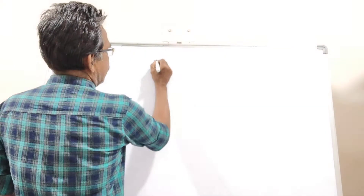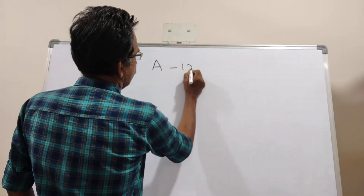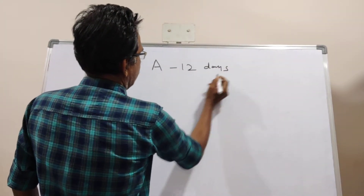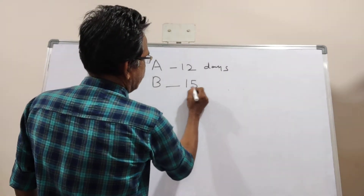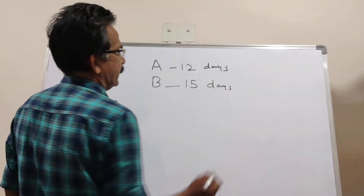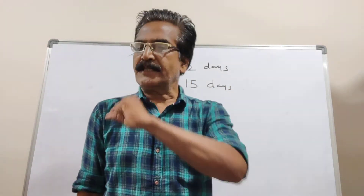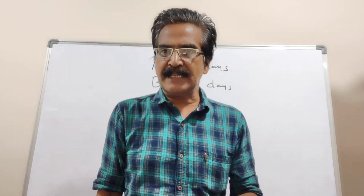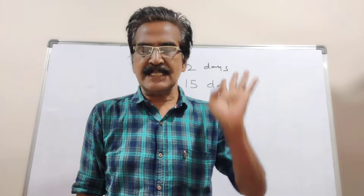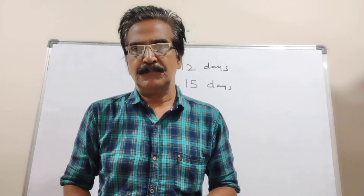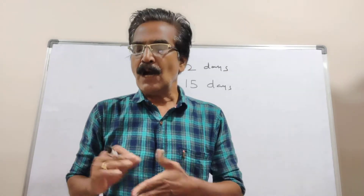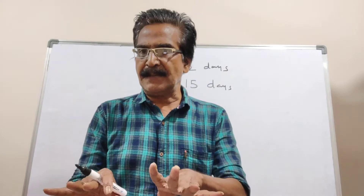Today's problem is: A can complete a work in 12 days, B can complete the same work in 15 days. A started the work and after 3 days, B also joined him. Now, how many more days will it take to complete the remaining work?